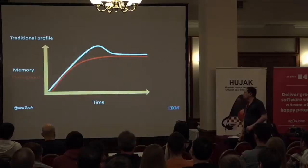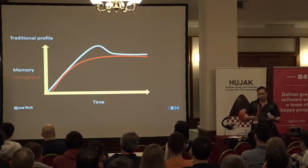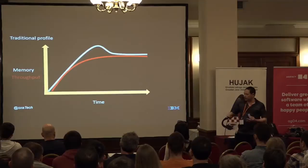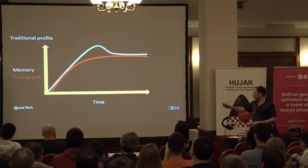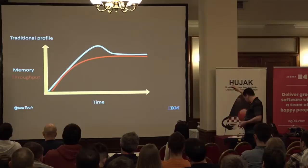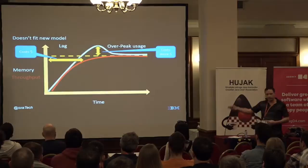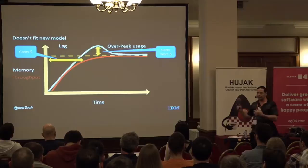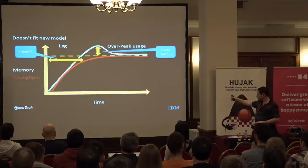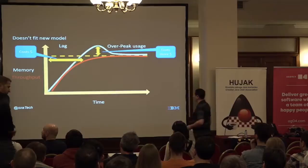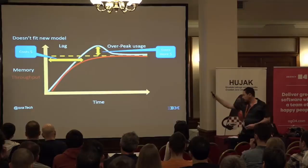If we look at any one of these small compute units, assuming they're running Java, this is the traditional profile of a Java application starting up. Start up and shut down become more important when scaling microservices up and down. The throughput of a Java application will always go up fairly slowly because the JIT needs to warm up. Memory will also go up, peak slightly as the JIT finishes, then go back down to a stable state. The over-peak usage costs more money than is ideal.